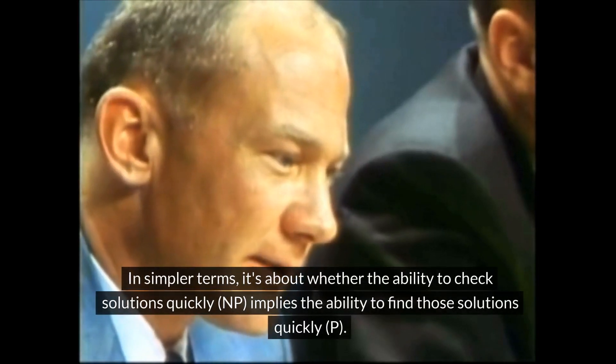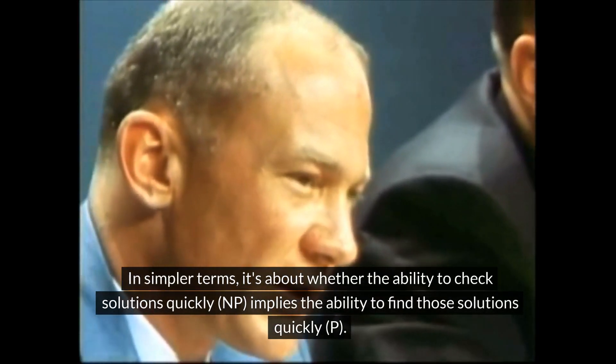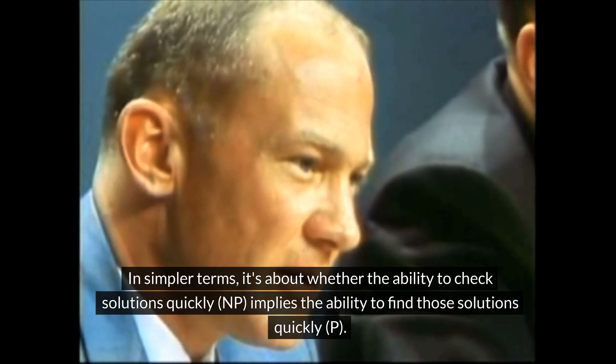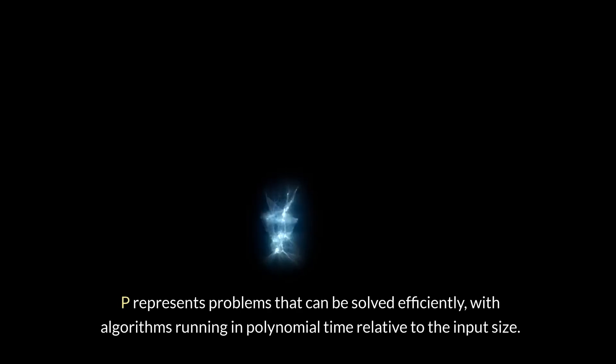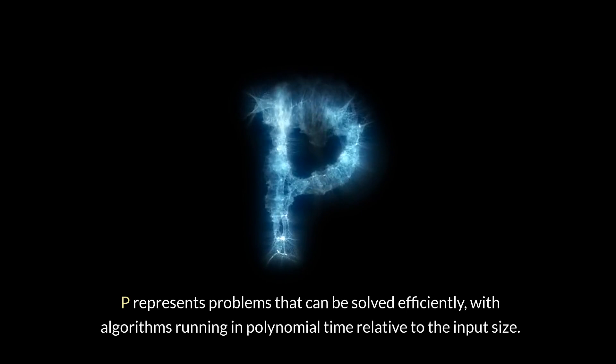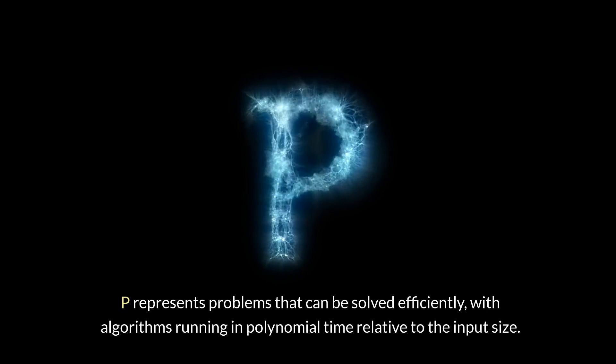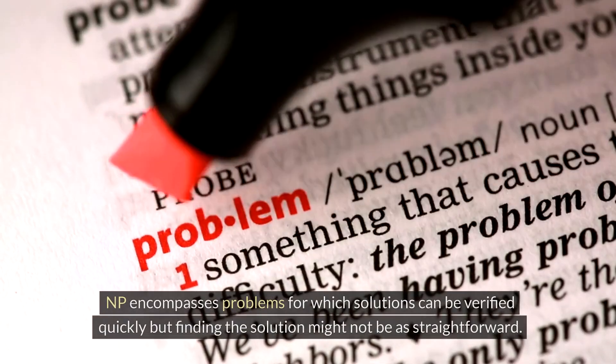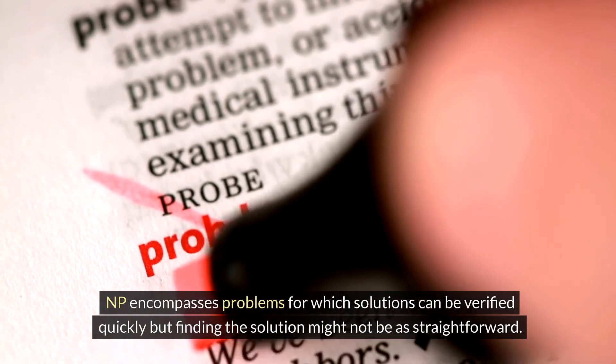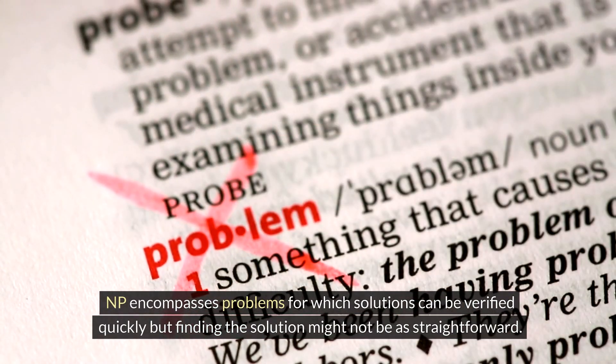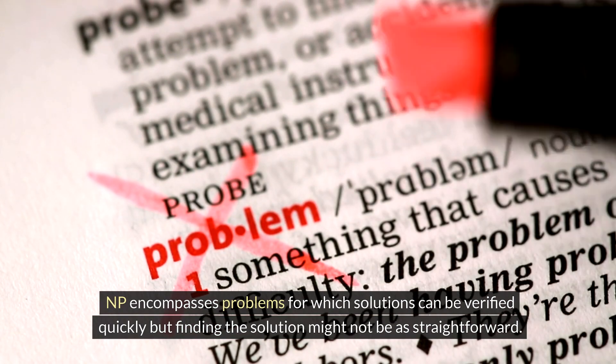In simpler terms, it's about whether the ability to check solutions quickly (NP) implies the ability to find those solutions quickly (P). P represents problems that can be solved efficiently, with algorithms running in polynomial time relative to the input size. NP encompasses problems for which solutions can be verified quickly, but finding the solution might not be as straightforward.